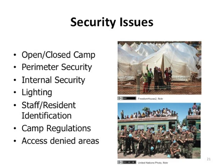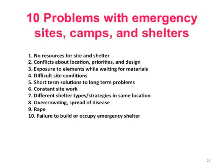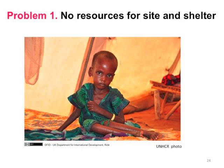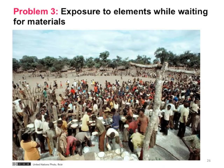These are common site and shelter problems. Ten problems often affect the emergency management of sites, camps, and shelters. One: no resources for site and shelter management. Two: conflicts about location priorities and design. Three: exposure to elements while waiting for materials, including rain, sunshine, wind, and dust.